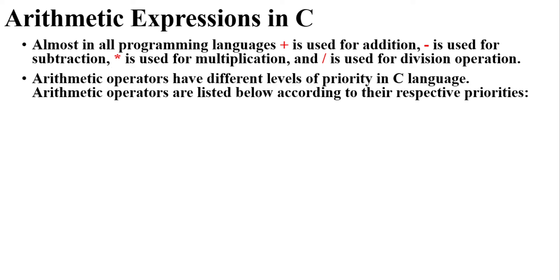Remember all these operators have different levels of priority in C — and not only in C, but in almost every language they have different priority levels. Depending on the priority, the program will execute a particular arithmetic operation first, or execute it later.